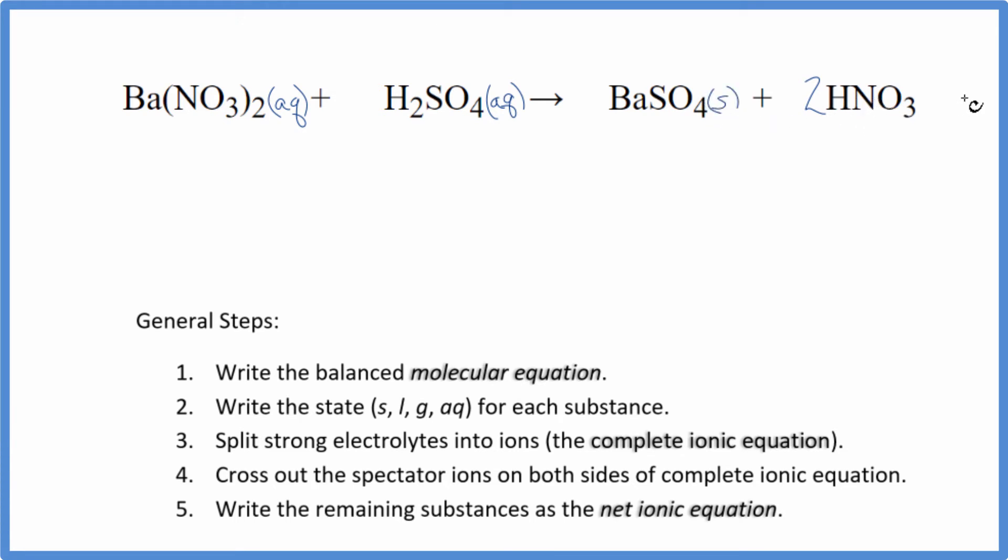For the nitric acid, that's another strong acid. That'll be aqueous. So we have the states. Now we can split the strong electrolytes into their ions. That'll give us the complete ionic equation.